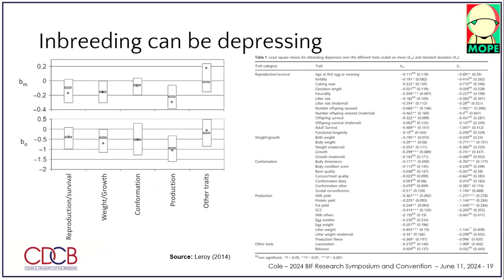Different traits are affected in different ways. This is from a paper where they went back and looked at hundreds of papers from the literature and did a meta-analysis to look at the effects of inbreeding — so this is kind of the average effect of inbreeding for all these different traits. These slides will be on the CDCB website probably next week and you can download them there — all the references are at the end. The top shows the means; the bottom shows the standard deviations. When inbreeding increases, you see a decrease in genetic variance as well as a decrease in the mean for these traits.